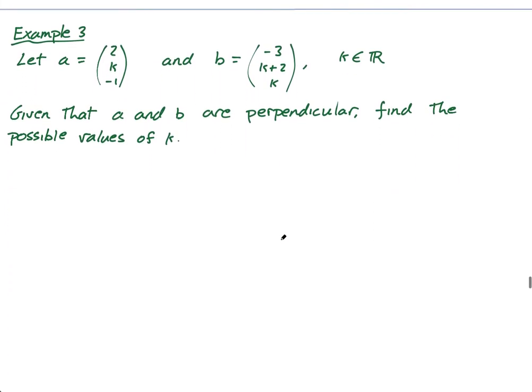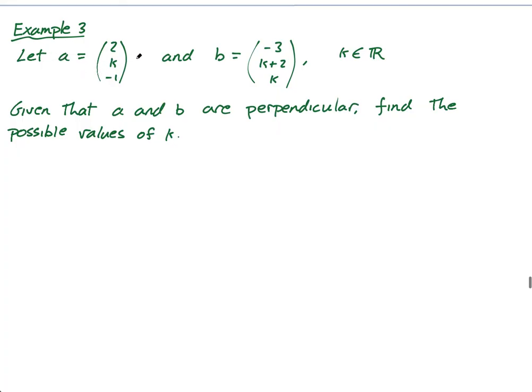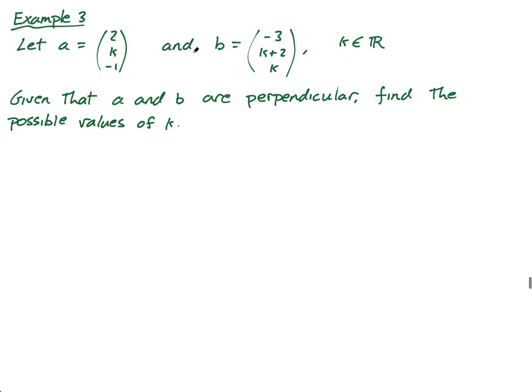Last example. Let a equal 2k negative 1 and b equals this. This is from an HL past paper. Given that a and b are perpendicular, find the possible values of k. Now, this is a very important concept. The formula is cos theta equals a dot b over the magnitude of a times the magnitude of b. Now, if they're perpendicular, perpendicular means right angles, 90 degrees, pi over 2 radians. What is the cos of 90 degrees or the cos of pi over 2 radians? It's zero.